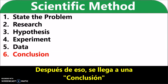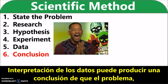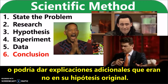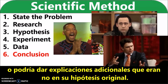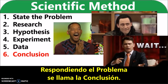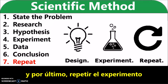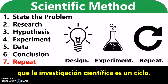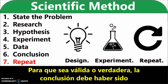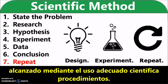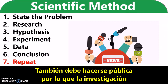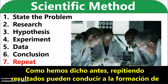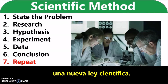After that, you come to a conclusion. Interpreting the data may produce a conclusion for that problem, or it might lead to the development of additional problems, or give additional explanations that were not in your original hypothesis. Answering the problem is called the conclusion. And last, repeat the experiment. Scientific inquiry is a cycle. To be valid or true, the conclusion must have been reached by using proper scientific procedures. It must also be made public so that the investigation can be repeated many times by other scientists. Repeating results can lead to forming a new scientific law.